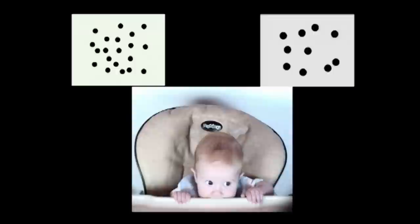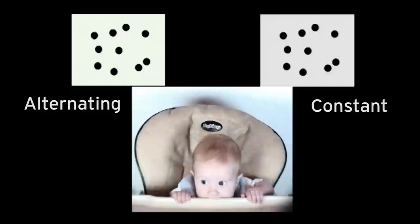In this task, the baby is looking at two different streams of dots. One stream is always showing a constant number of dots, so it's always showing ten dots. And then the other stream is alternating between ten and twenty dots.